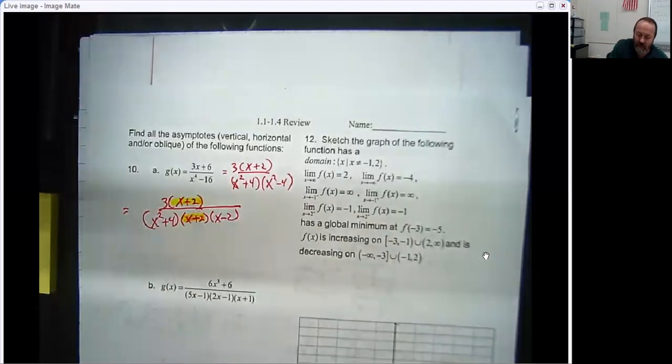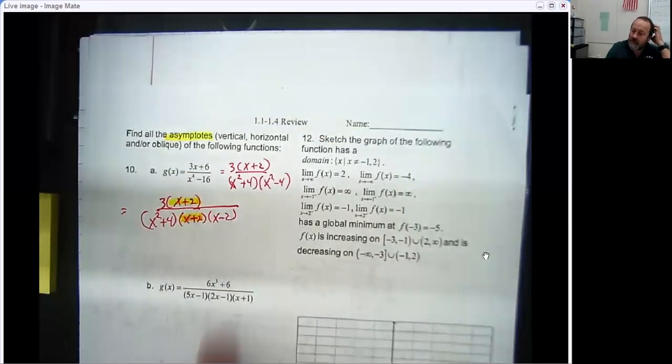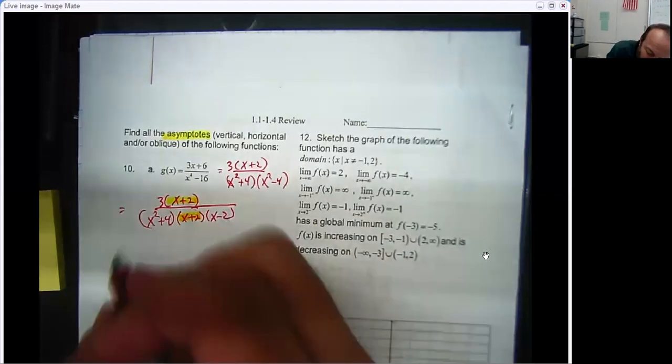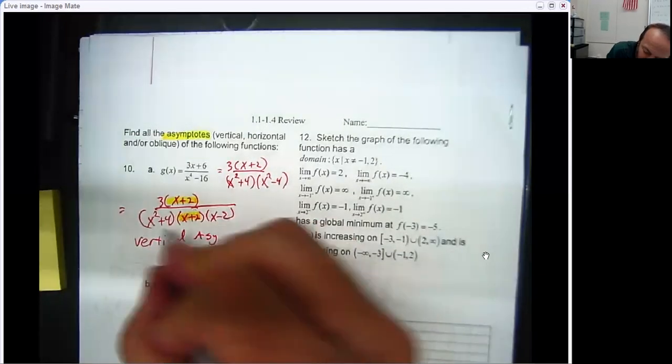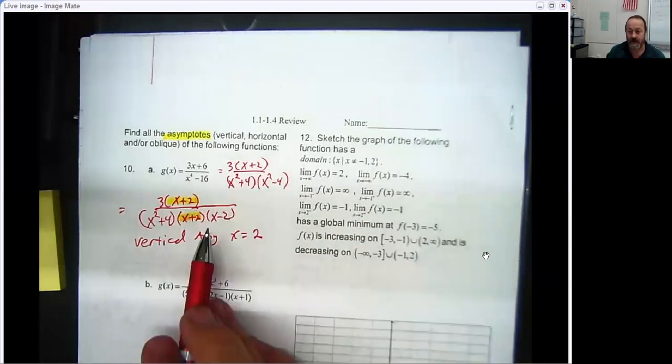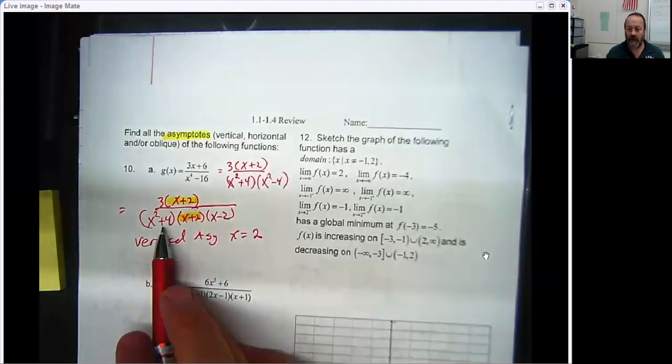So in the problem, since it only asks for asymptotes, I don't even need to mention this little piece because that is not an asymptote, it's a hole. So it looks like I've got a vertical asymptote anywhere where the denominator would go to 0, and it turns out that would happen at x equals 2. But this cannot go to 0, so I don't need to worry about it.